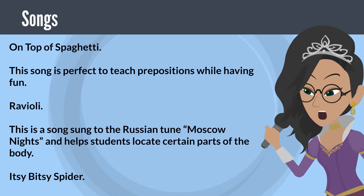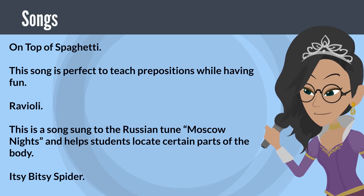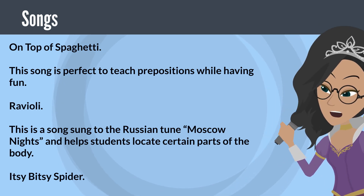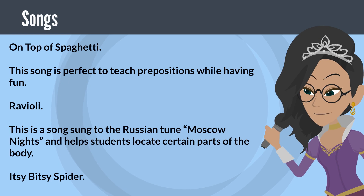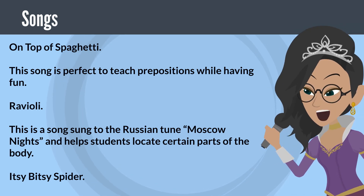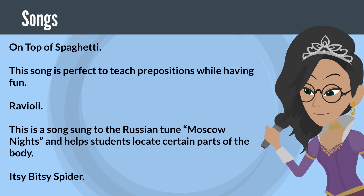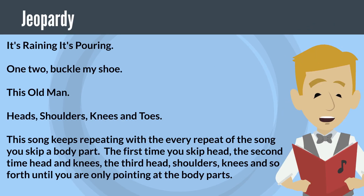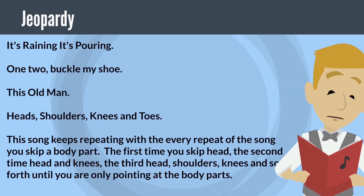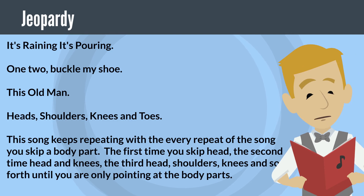'On Top of Spaghetti' — this song is perfect to teach prepositions while having fun. 'Ravioli' — a song sung to the Russian tune 'Moscow Nights' that helps students locate certain parts of the body. 'Itsy Bitsy Spider,' 'It's Raining It's Pouring,' and 'One Two Buckle My Shoe' are also great options.